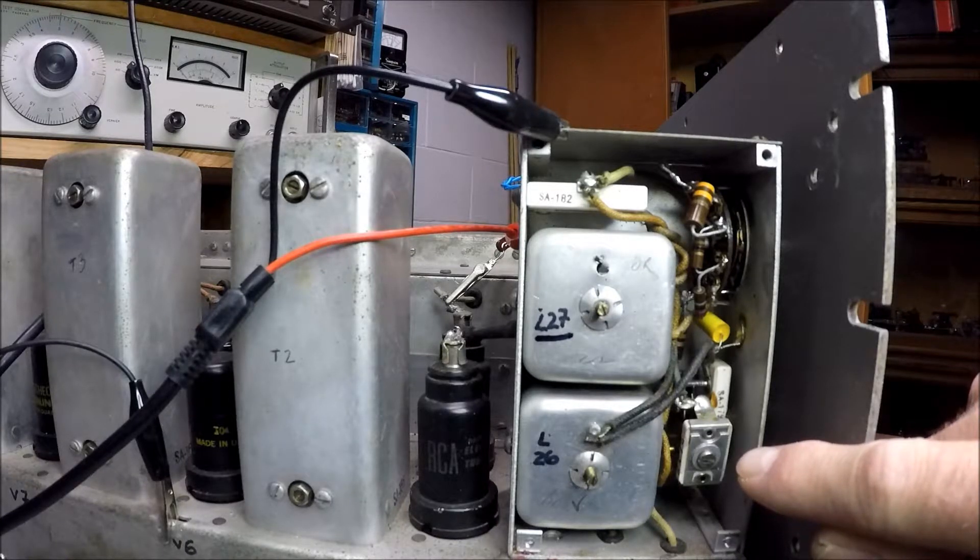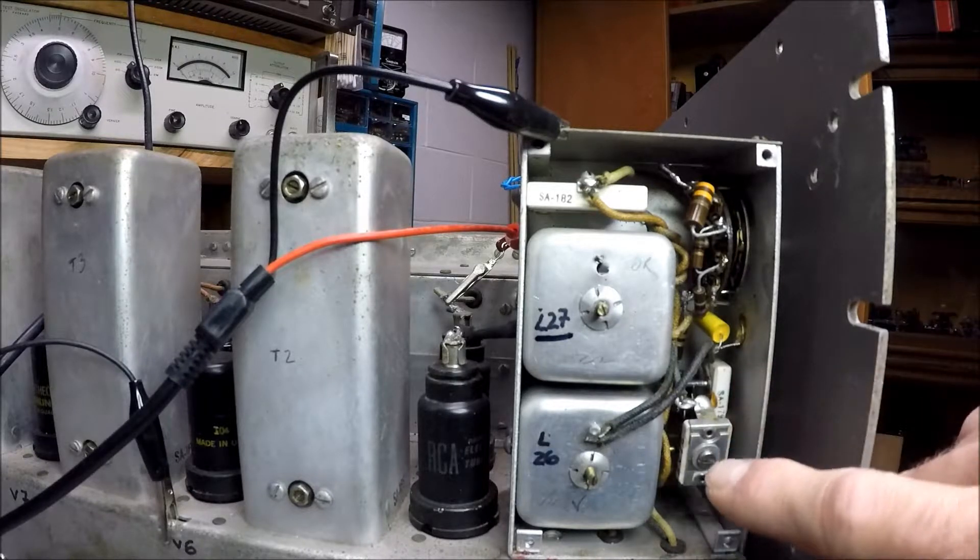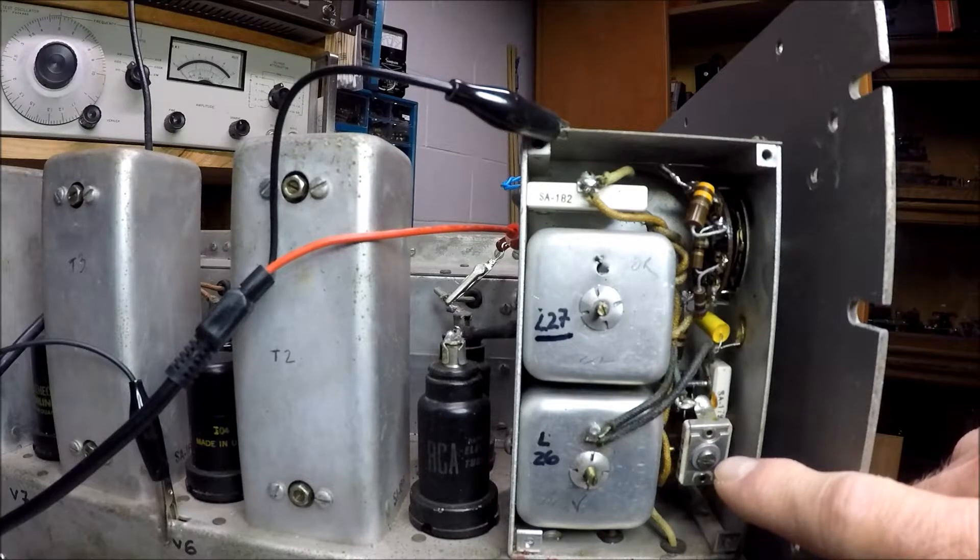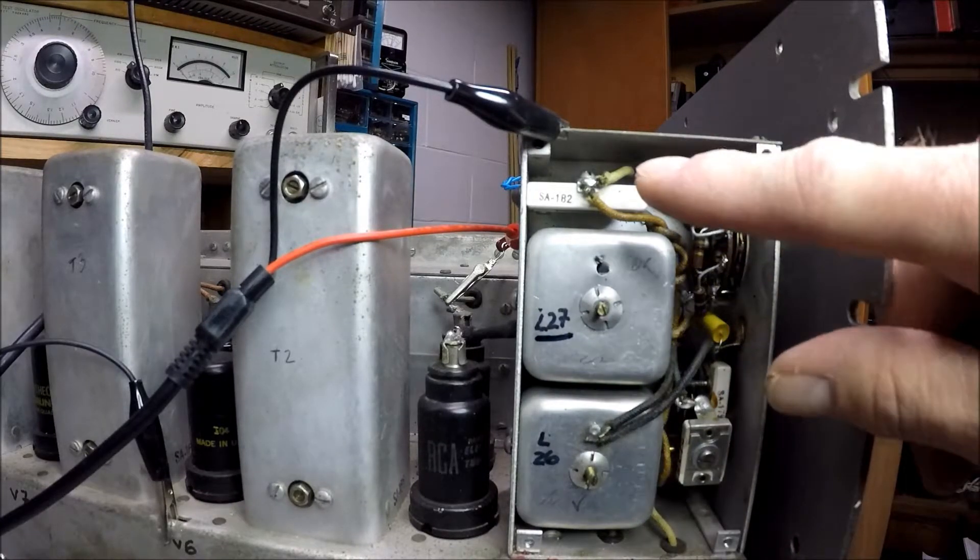Here's the trimmer capacitor that's in parallel with the phasing control. This trimmer capacitor needs to be adjusted precisely so that you get a resonance between the phasing control and the crystal.